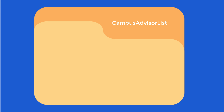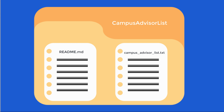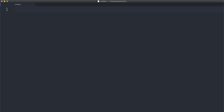In this lesson, I want to create a repository that has a list of Campus Advisors. I want to include a readme.md file and a text file called Campus Advisor List. The readme will have instructions on how to add Campus Advisors to the Campus Advisor List.txt file. To do this, let's first open up Atom. I want to make a new directory, so let's open the command line by simultaneously clicking the Control and tilde keys.